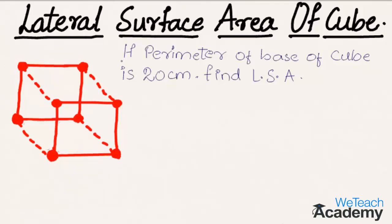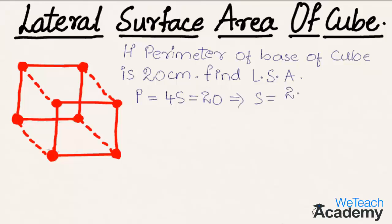Another example: if the perimeter of the base of a cube is 20 centimeters, find the lateral surface area. The base is a square, so the perimeter = 4s. Setting 4s equal to 20 and solving, we transfer 4 to the right-hand side to get s = 20 ÷ 4.